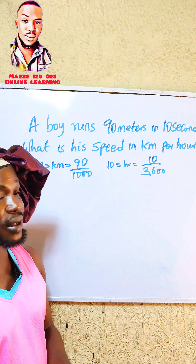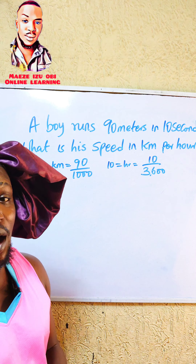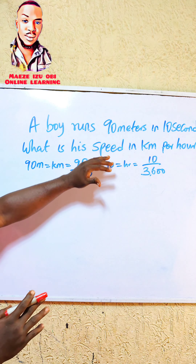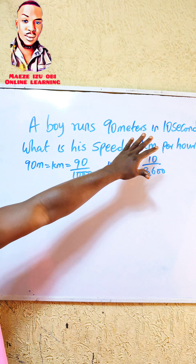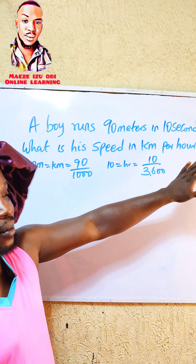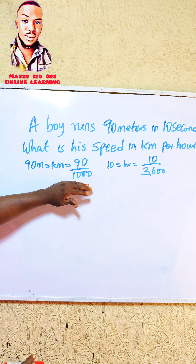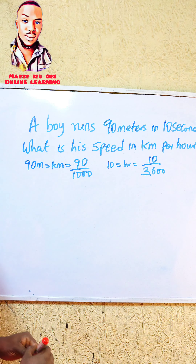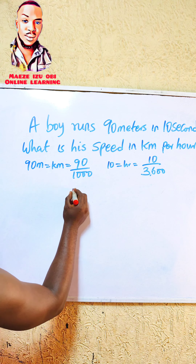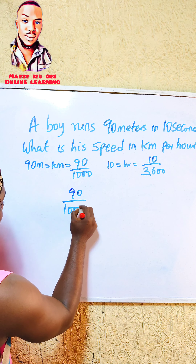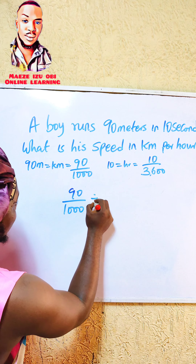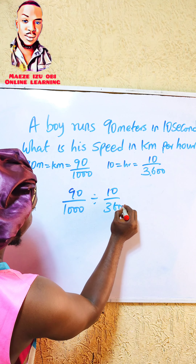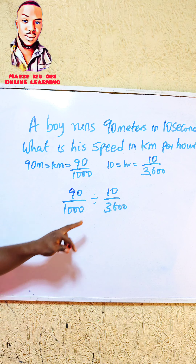First of all, to convert 90 meters to kilometers: 90 meters to kilometers is equal to 90 over 1000. Now to convert 10 seconds to hours: 10 seconds to hours is equal to 10 over 3600, because there are 3600 seconds in one hour.